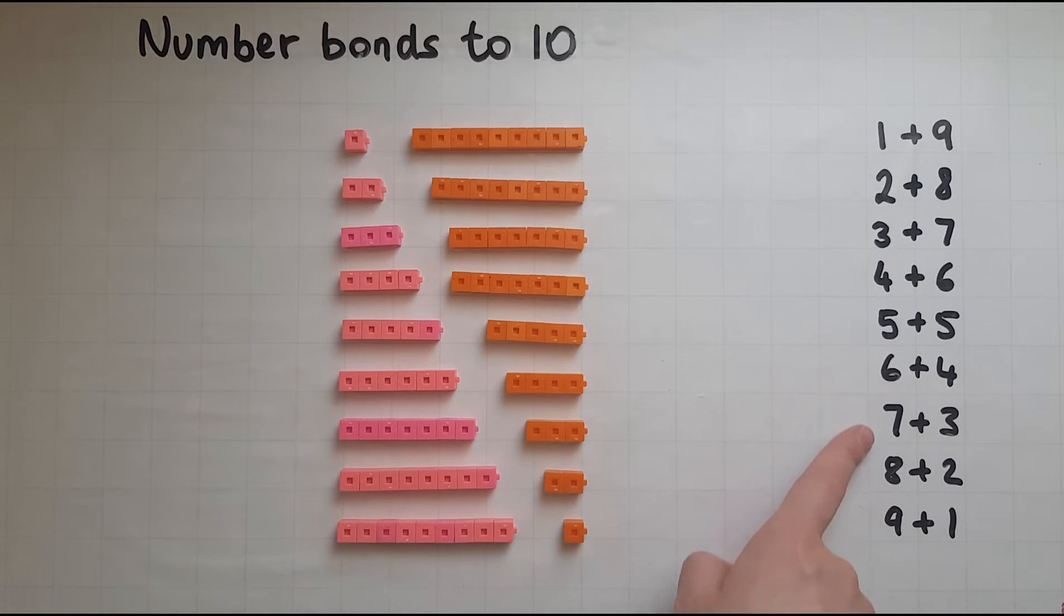So 1, 2, 3, 4, 5, 6, 7, 8, 9. Whereas the orange cubes 9, 8, 7, 6, 5, 4, 3, 2, 1. So 1 and 9 makes 10.